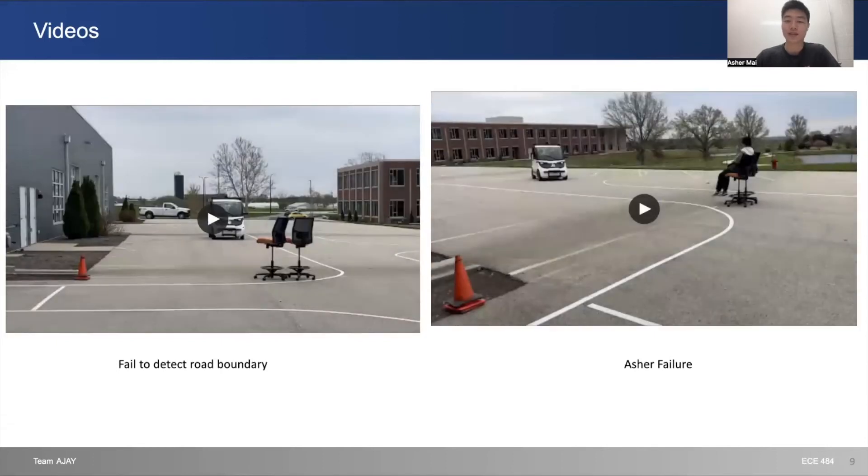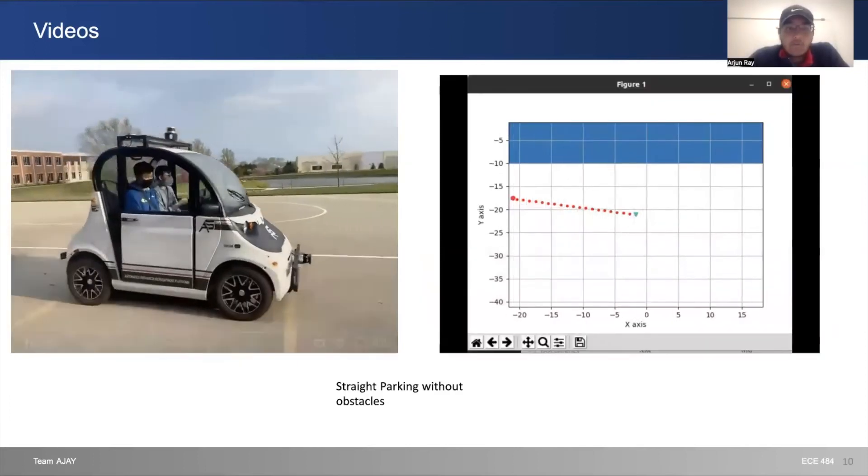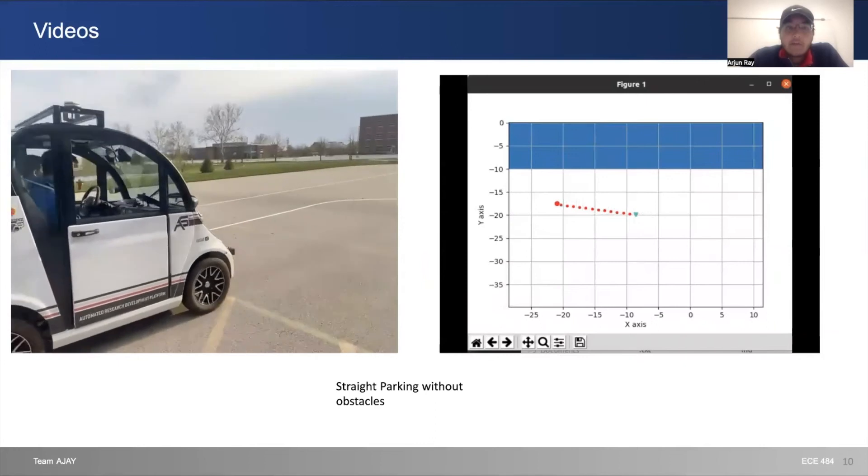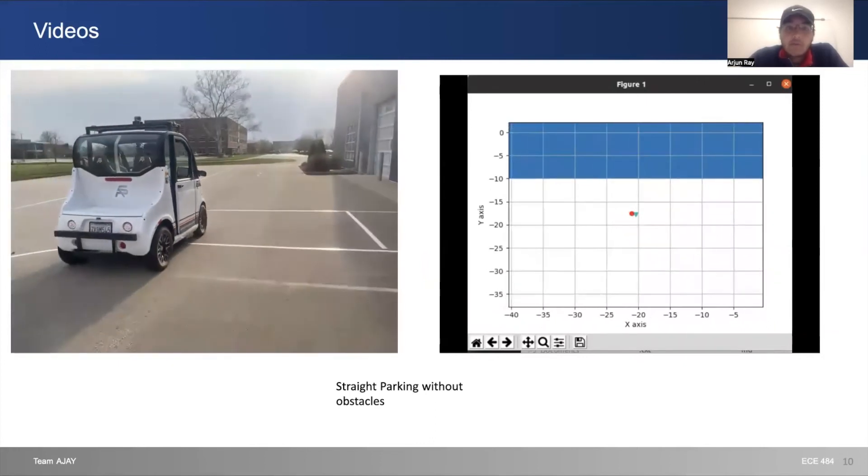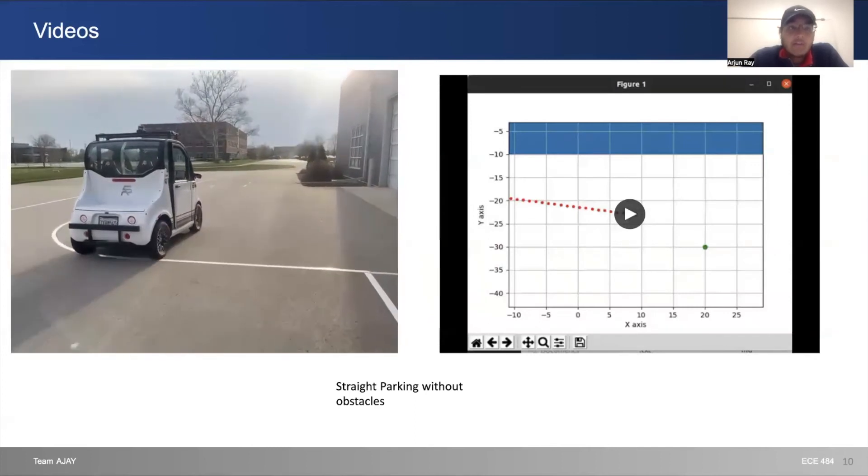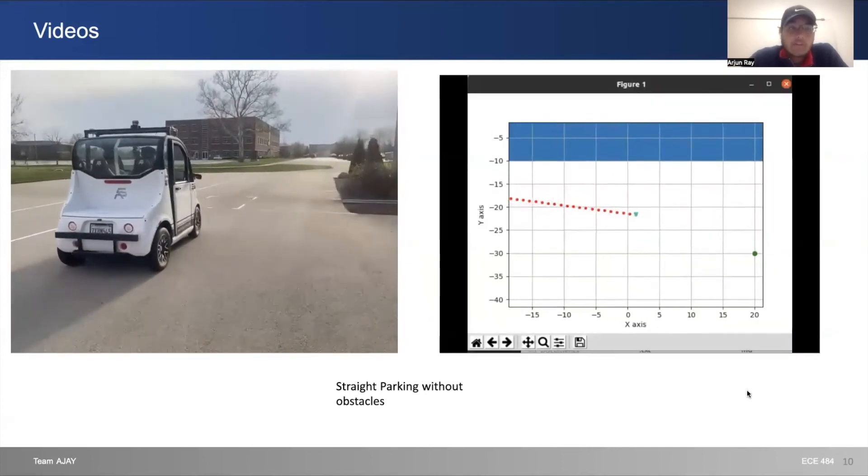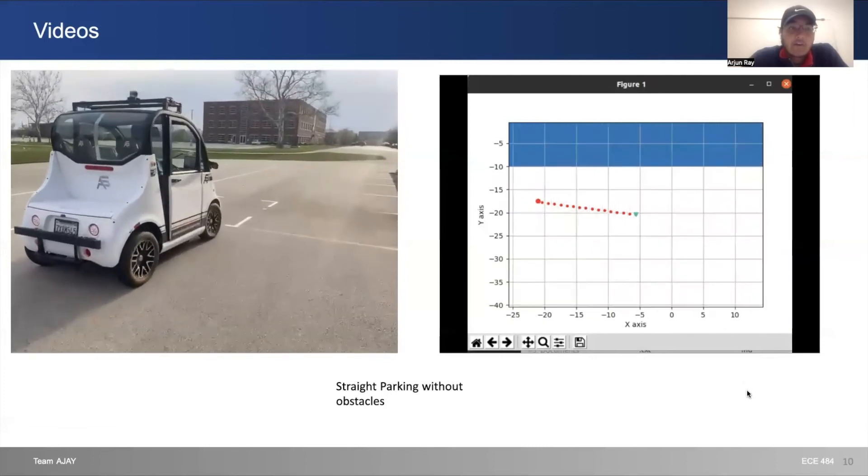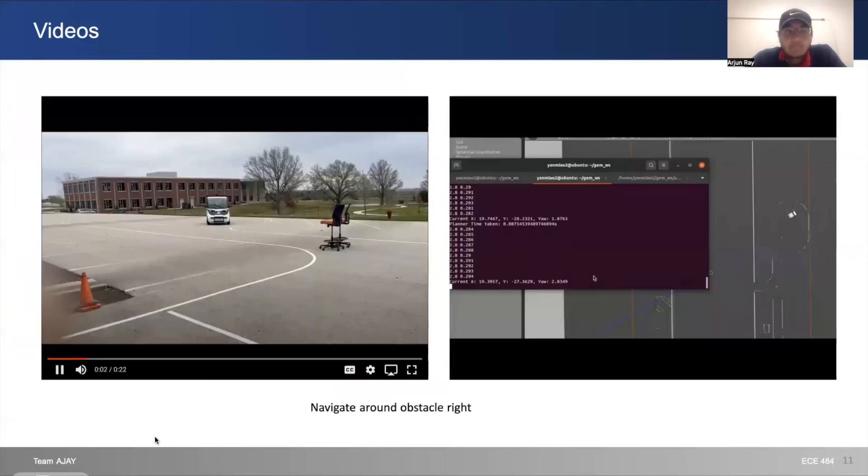This experiment shows proof of concept. On the right, we have an animation generated by our hybrid A* code showing the waypoints that get created. On the left, we're driving with those waypoints. As you can see, even in the simple case, the car comes to an accurate stop in the box.